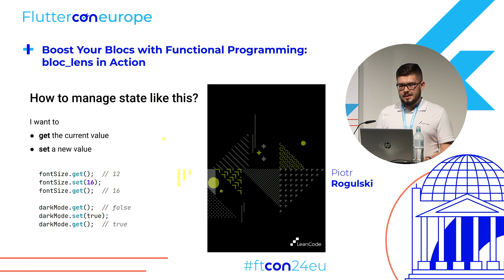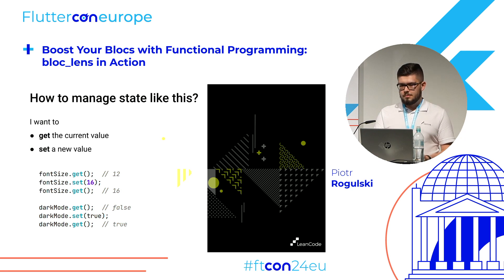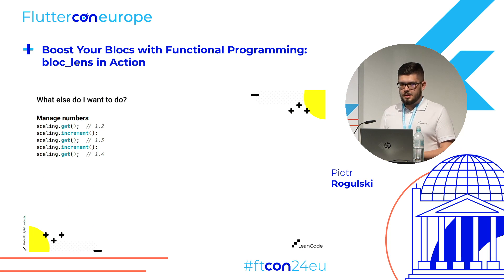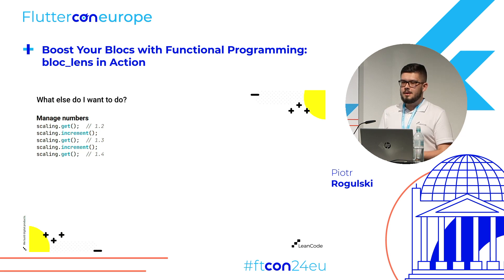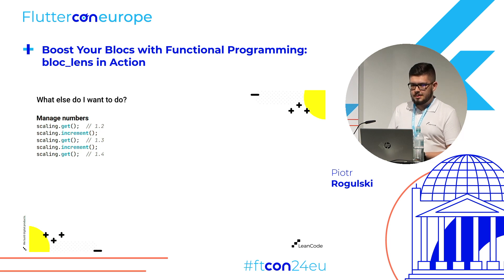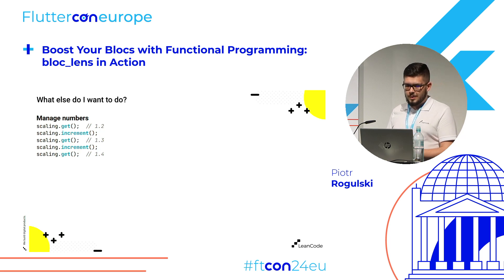But besides all those basic get and set methods, what other functionality do apps need? A lot of values in the apps are numbers — for example, font size, you can have some additional scaling, some kind of sizes, delays — and numbers can be incremented, can be decremented. So I want to have those methods as well in my app.